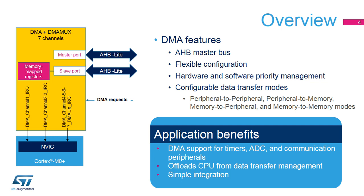Most APB peripherals can be configured to assert DMA requests, which is particularly useful for communication peripherals and converters such as ADC and DAC. For example, the ADC controller acquires samples stored in an internal FIFO. To transfer these samples to a buffer in SRAM, the STM32G0 offers two possibilities: asserting an interrupt request and transferring samples from FIFO to memory by software, or relying on a DMA channel to empty the FIFO and transfer the contents to a buffer in SRAM.